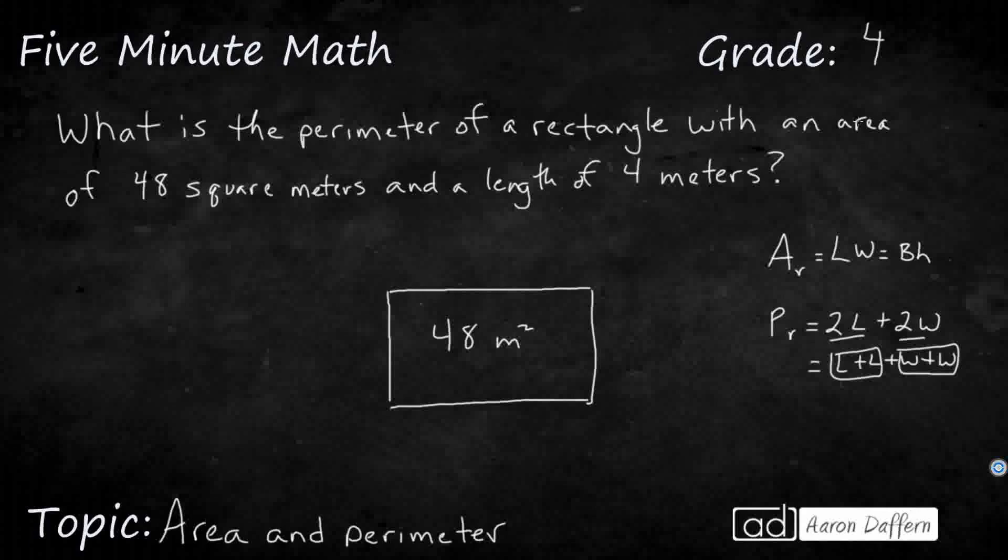And they have to give you one of the measurements. Because 48 could be 12 times 4, or 6 times 8, or 24 and 2, or 48 and 1. There are many different ways to get 48, even 16 times 3.